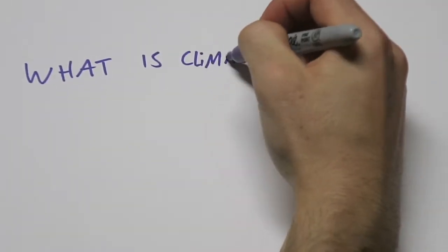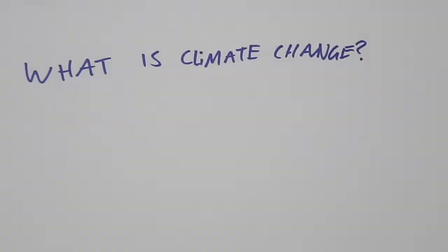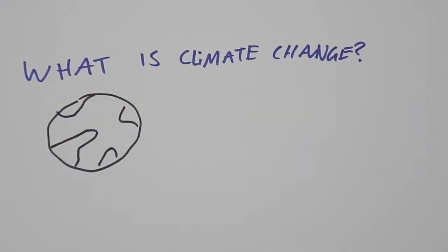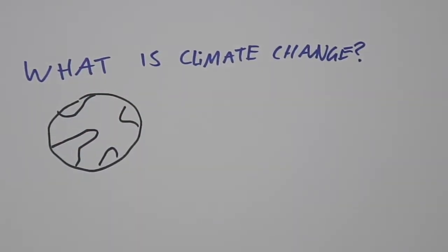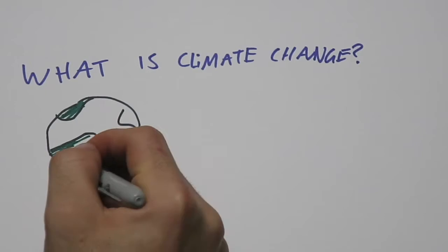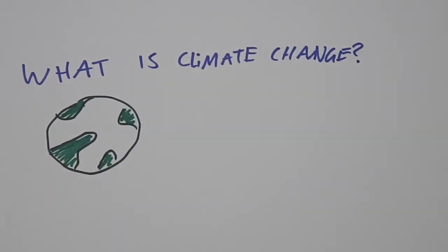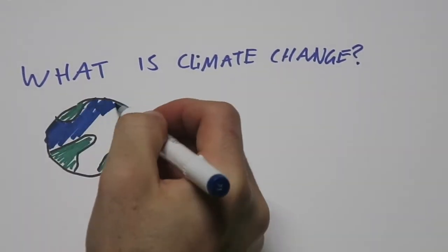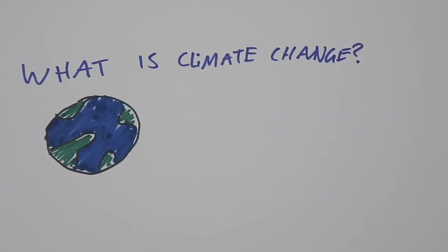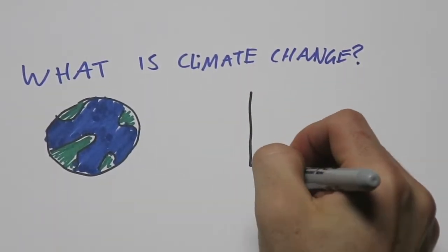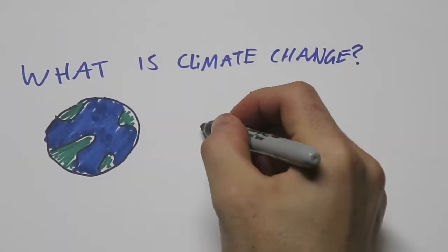Throughout history, the Earth's average temperature has remained largely stable, fluctuating no more than half a degree over 500-year spans. However, recently, the world has undergone a rapid increase in global temperature. The International Panel on Climate Change have calculated an increase of 0.85 degrees Celsius over the last 132 years.